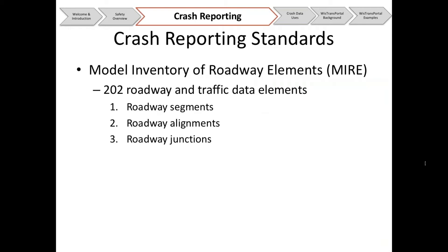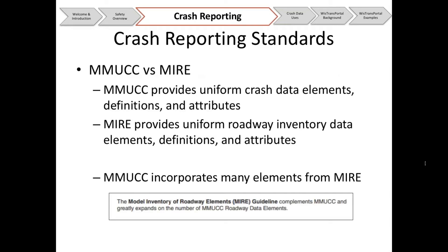The MIRE elements include 202 roadway and traffic data elements, broken down into roadway segments, roadway alignments, and roadway junctions — which can be either interchange ramps or intersections. MUCC provides the uniform crash data elements, definitions, and attributes, while MIRE provides uniform roadway inventory data elements, definitions, and attributes. MUCC does incorporate many of the elements of MIRE; the idea was that MUCC shouldn't recreate the wheel and should pull from other documents that exist.